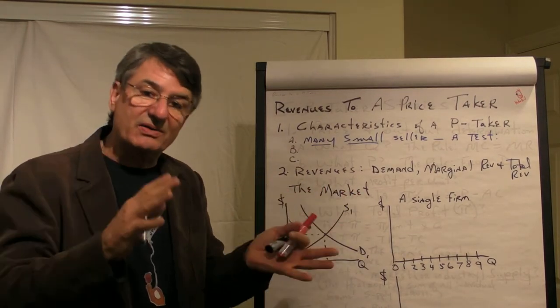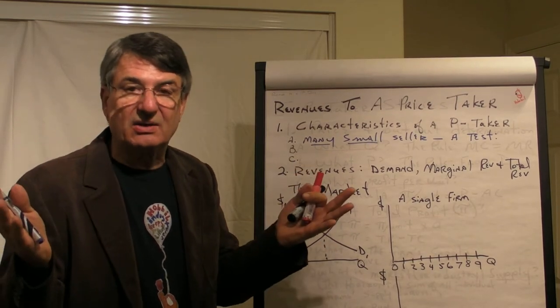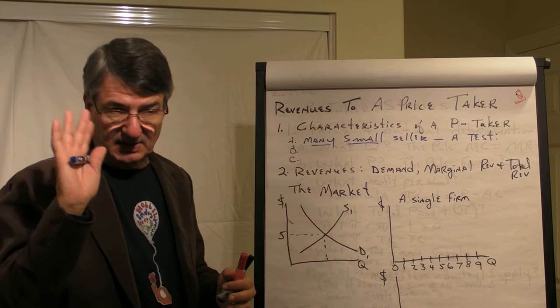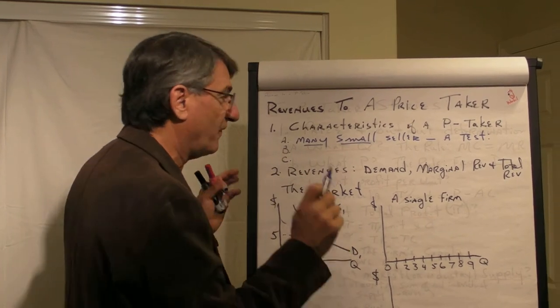because they are so small relative to the market that they have no influence. There may be thousands or hundreds of thousands of other sellers selling exactly the same thing they do that are perfect substitutes for what this firm is selling. So they cannot affect the market.